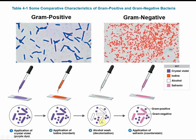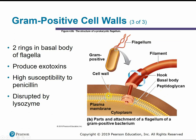So that we can see gram-negative cells under the microscope and they show up, we add our counterstain, which is safranin. Now we have a contrast in color between gram-positive and gram-negative. Because gram-positive cell walls have a single membrane, they only have a single pair of rings in their flagella. Gram-positive cells are capable of producing exotoxins and have higher susceptibility to penicillin and can be disrupted by lysozyme. They don't have that extra outer layer, so it's easier to get through and damage these cells.